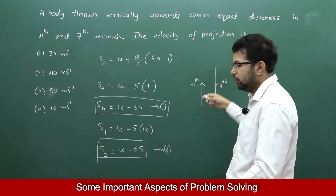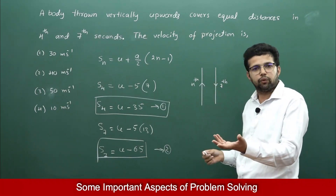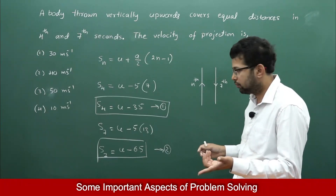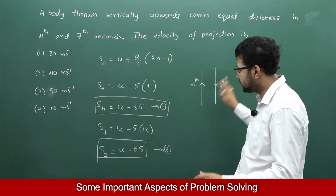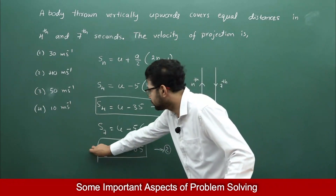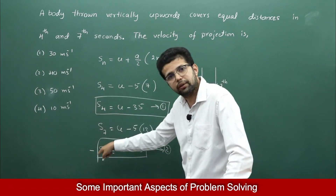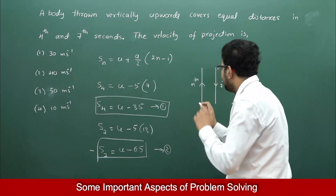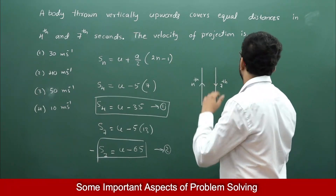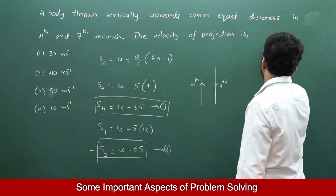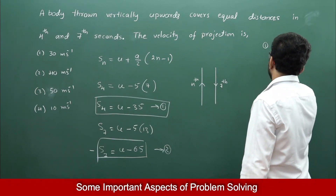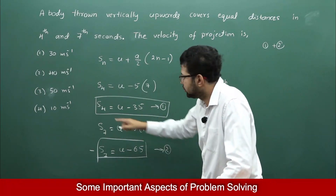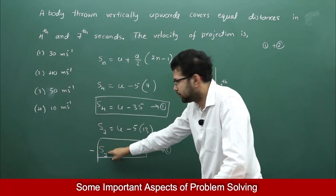When the object is going upwards, displacement is positive. When the object is going downwards, displacement is negative. So S7 can be written as negative, and the magnitude of S4 equals the magnitude of S7. Now, if I add equations 1 and 2, S4 and S7 cancel out because one is positive and one is negative.